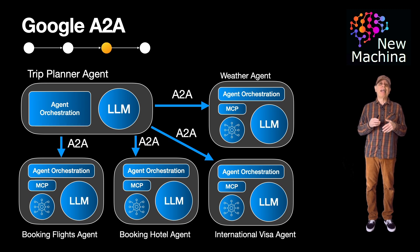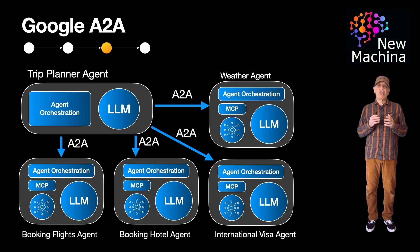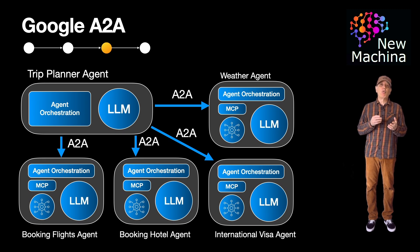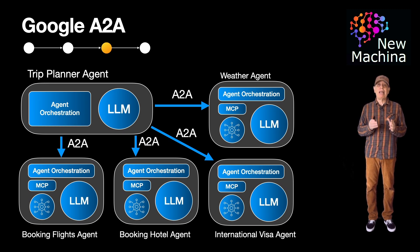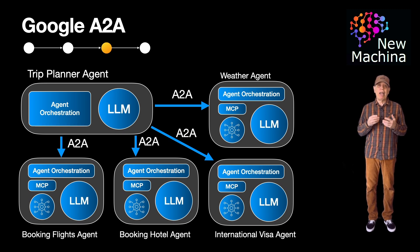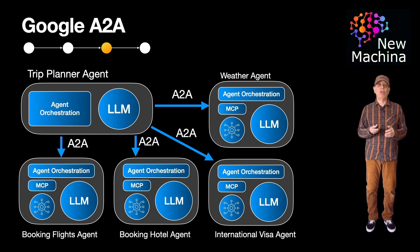So why do standards like A to A matter? Well, if the future of AI is agentic systems with teams of smart agents working together, then undoubtedly agents will be developed by different teams, companies, and vendors. This vision only works if they can communicate in a common way. A to A helps make that possible, giving us more modular and flexible AI systems that don't have to be rebuilt every time you add something new.